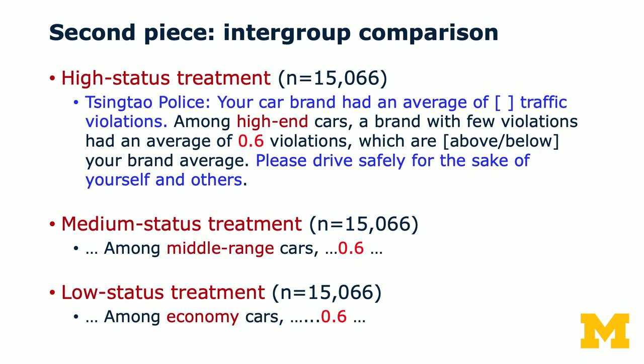Then we have three status treatments, each with about 15,000 observations. This is about intergroup comparison with status built into it. The high status treatment says: 'Among high-end cars, a brand with few violations had an average of 0.6 violations — your violations are above or below your brand average. Please drive safely for the sake of yourself and others.' We then have a medium status treatment — among middle-range cars, 0.6 — and a low status treatment — among economy cars, the average is 0.6.